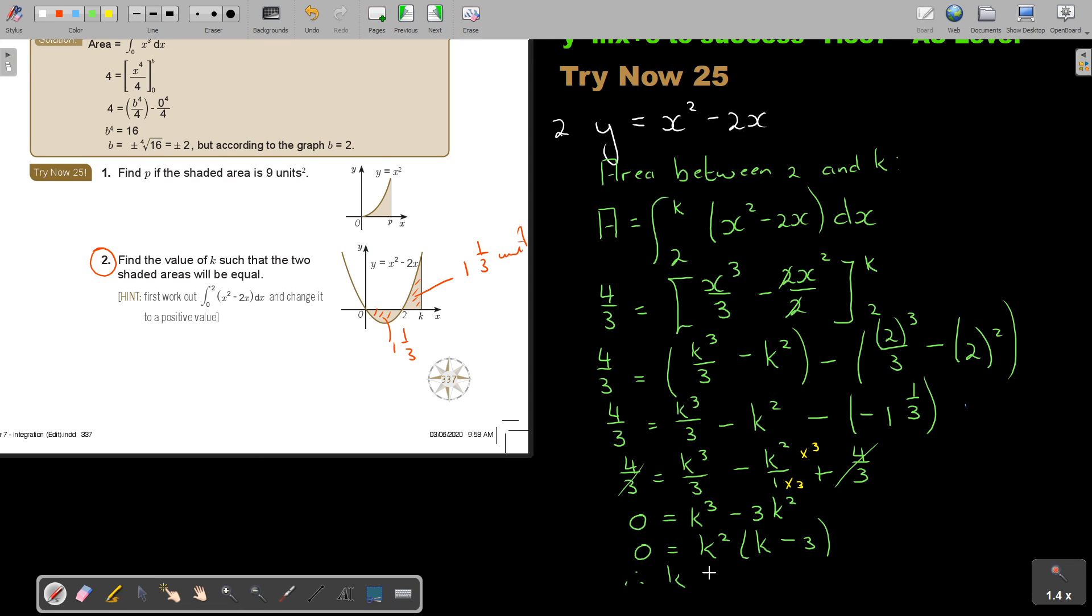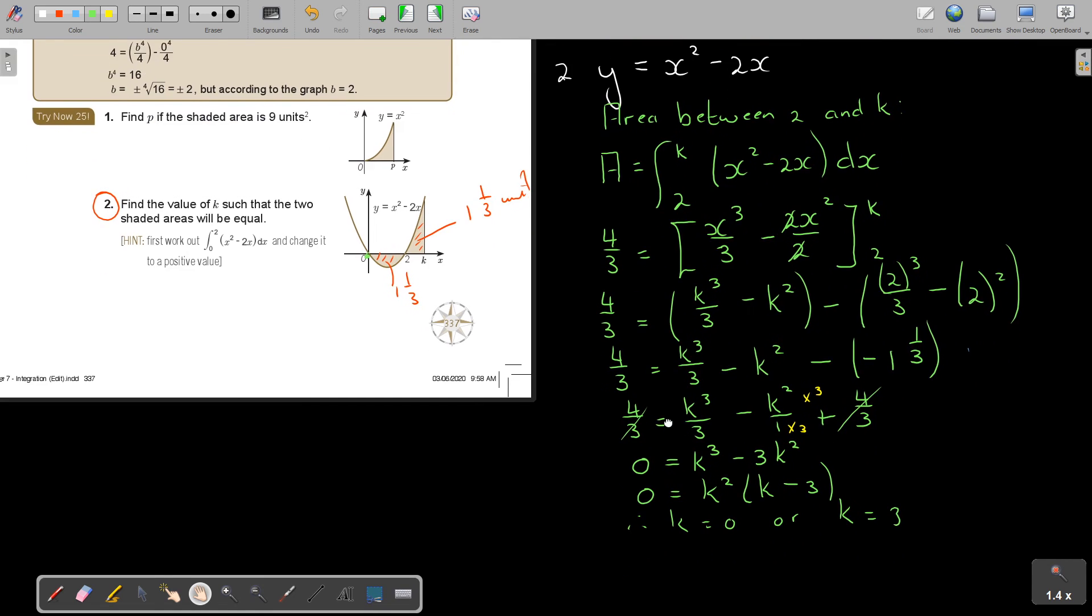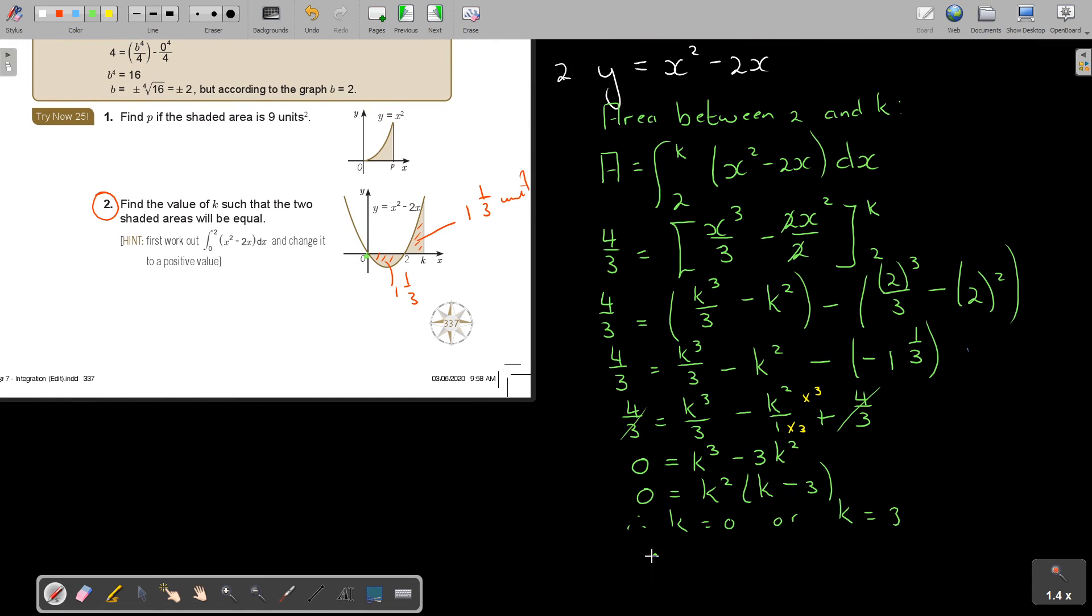Therefore, the value of K squared is 0, or K is 0, or K is equal to 3. And K cannot be 0, but there it can be 3. So what will be my final answer? Therefore, K is equal to 3. And that's your final answer. It's not really that difficult. It's just manipulating the formula a little bit and using the knowledge of area and integration.